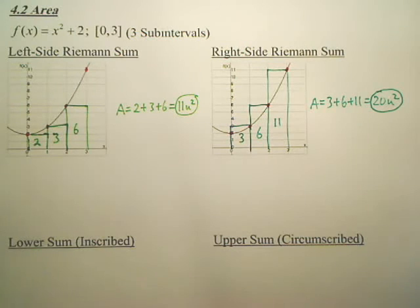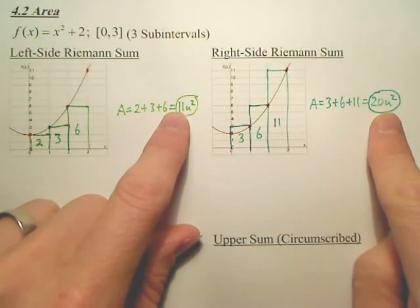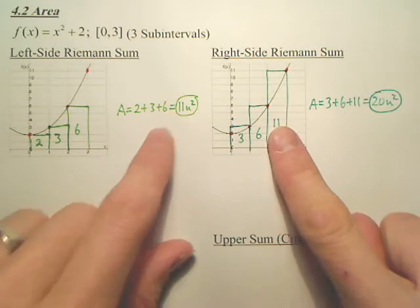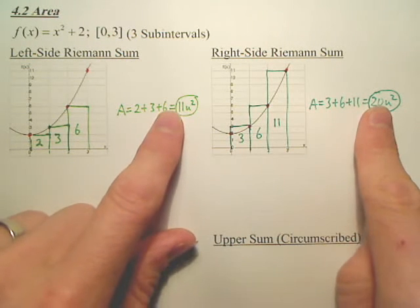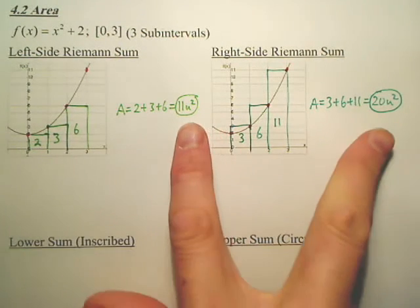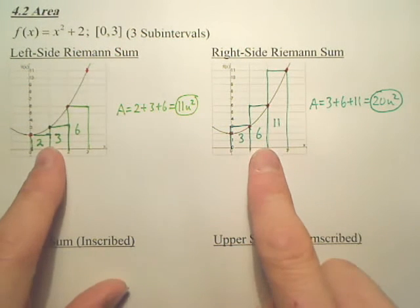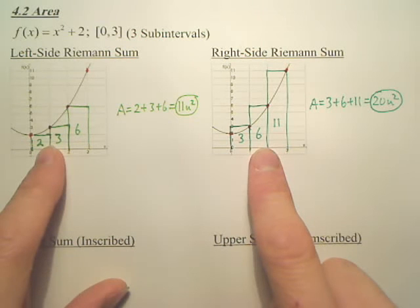Now, 20 square units. Would you agree the area underneath this curve is somewhere between 11 and 20? This one is above, this one is below, so could we possibly average those and get a somewhat reasonable area under the curve? Yes. Okay. So it's probably going to be the average of those, it would be somewhat accurate. Would you also agree the more rectangles you make, the more accurate it gets? Yes. Got it?